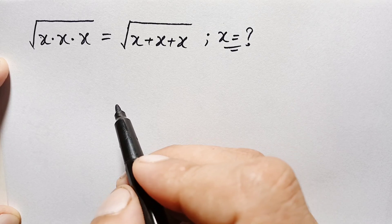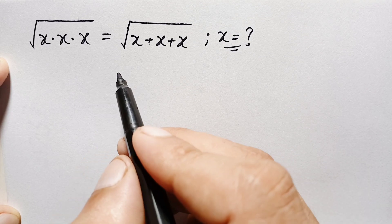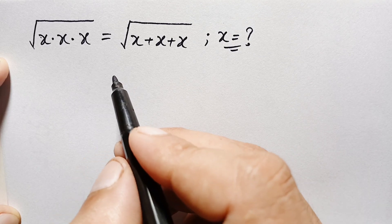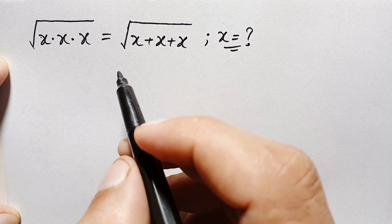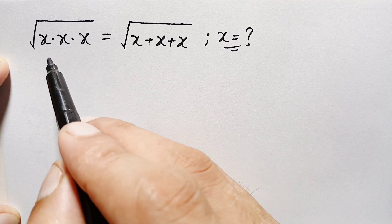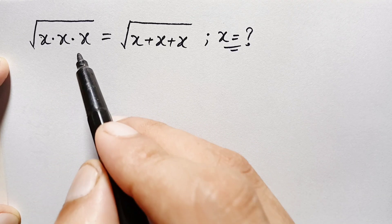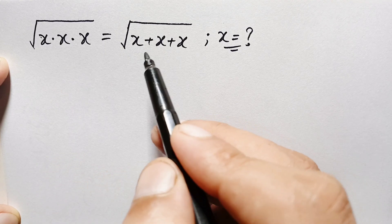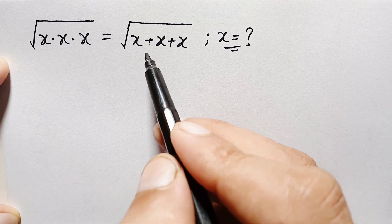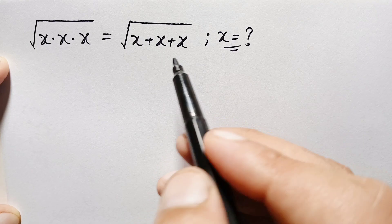Hello everyone, you are welcome. Today we have a new interesting square root algebra math problem: the square root of x times x times x is equal to the whole square root of x plus x plus x.